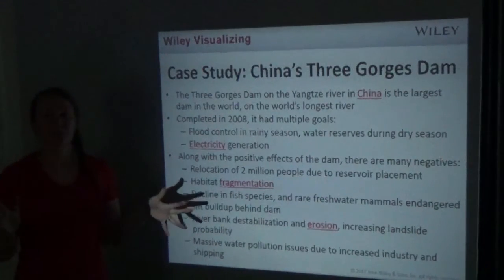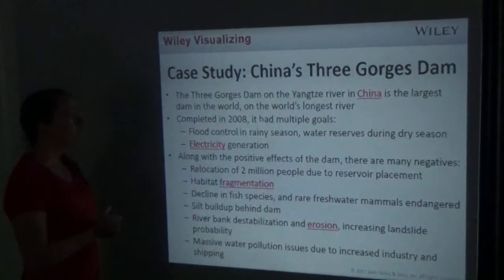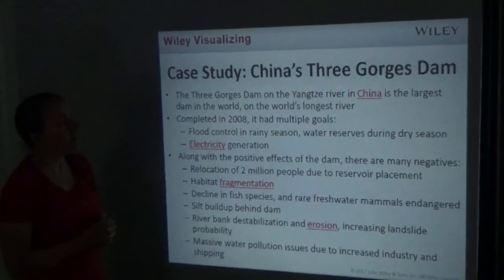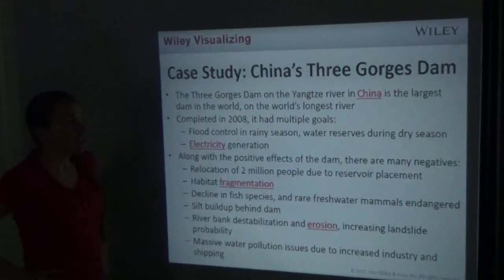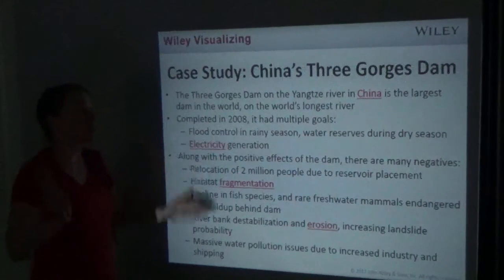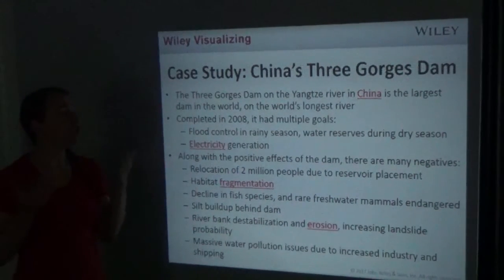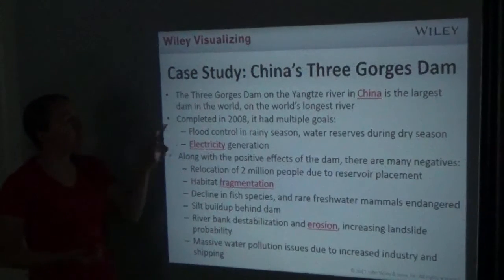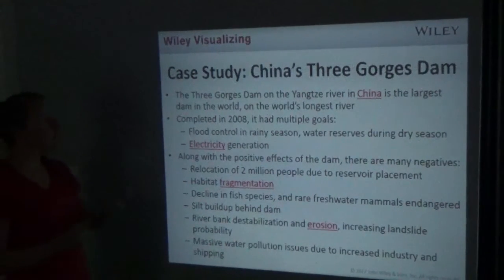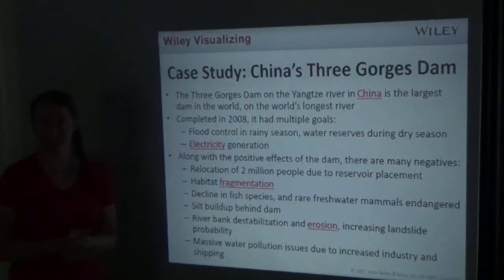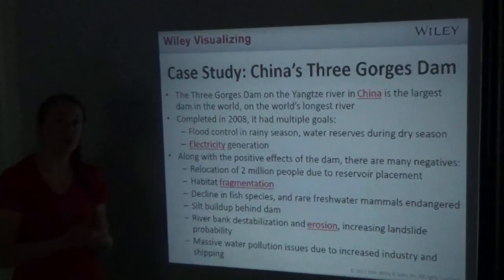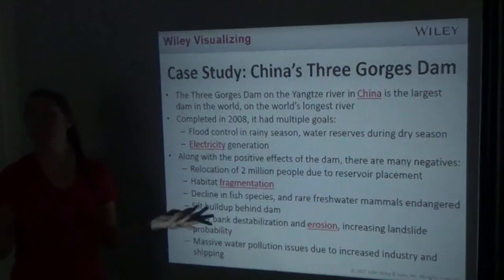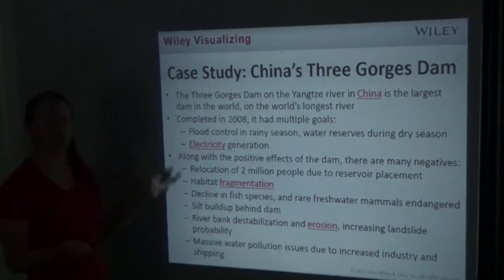The Three Gorges Dam on the Yangtze River in China is the largest dam in the world on the world's longest river. It was completed in 2008 and had multiple goals: controlling floods during the rainy season, reserving water during the dry season, and generating electricity through hydropower — which we discussed as a renewable energy source.